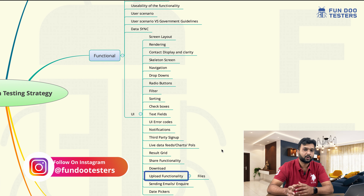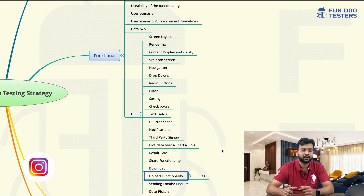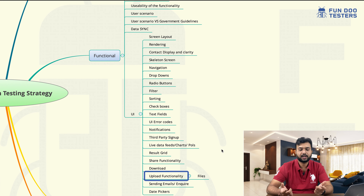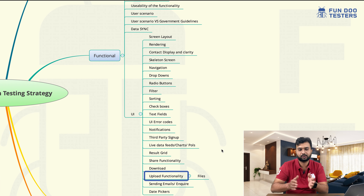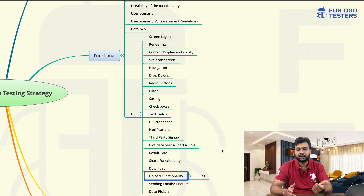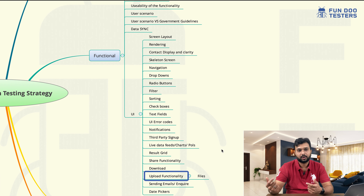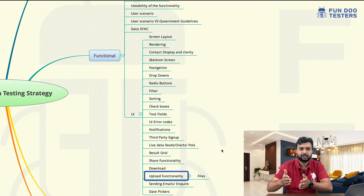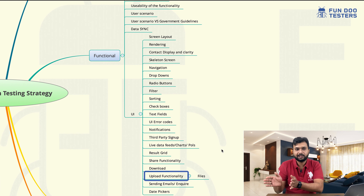But what will be the difference? For example, you are working on a login field or a password field. The password field will remain the same across all applications, but there can be different validations. A normal application can have 6 to 32 characters for a password, but a banking application or other secure application will have different combinations — like a character, special character, and numerical value. So only the validation will change, but the remaining things will remain the same.